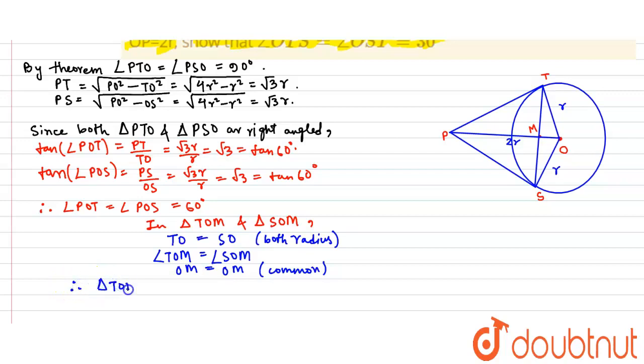And therefore, triangle TOM is congruent to triangle SOM by SAS criterion. From this we get that angle OTM equals angle OSM as congruent parts of congruent triangles, CPCT.